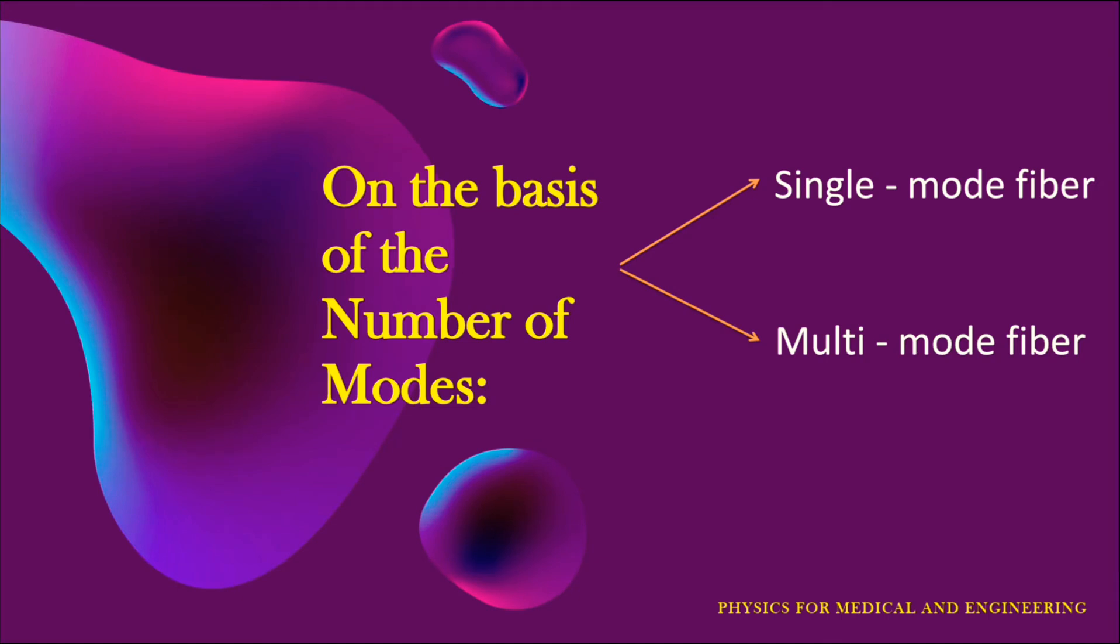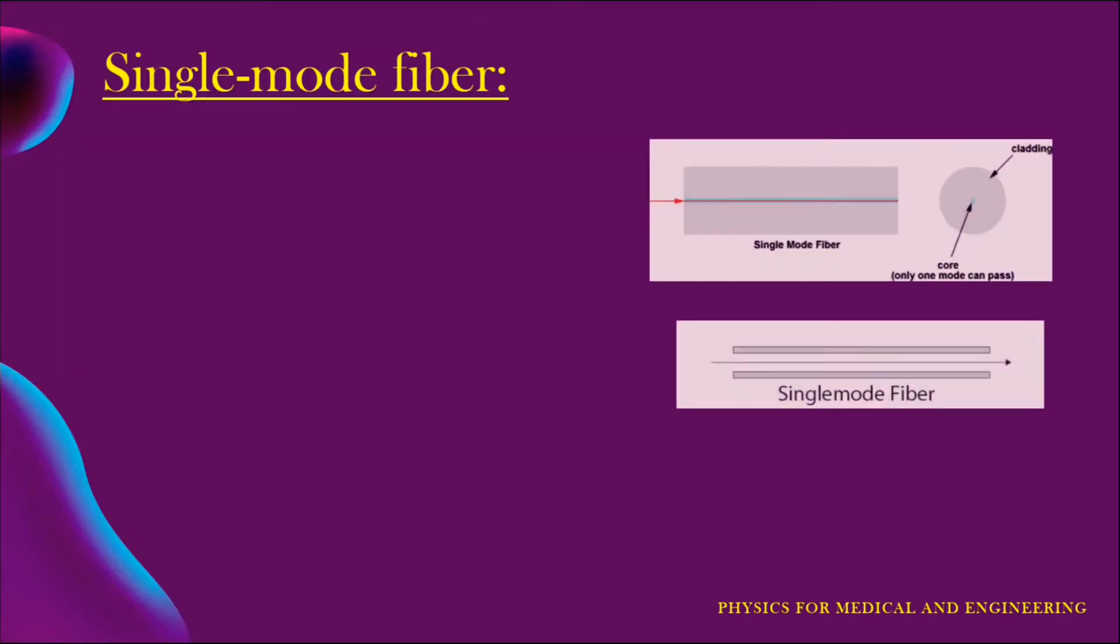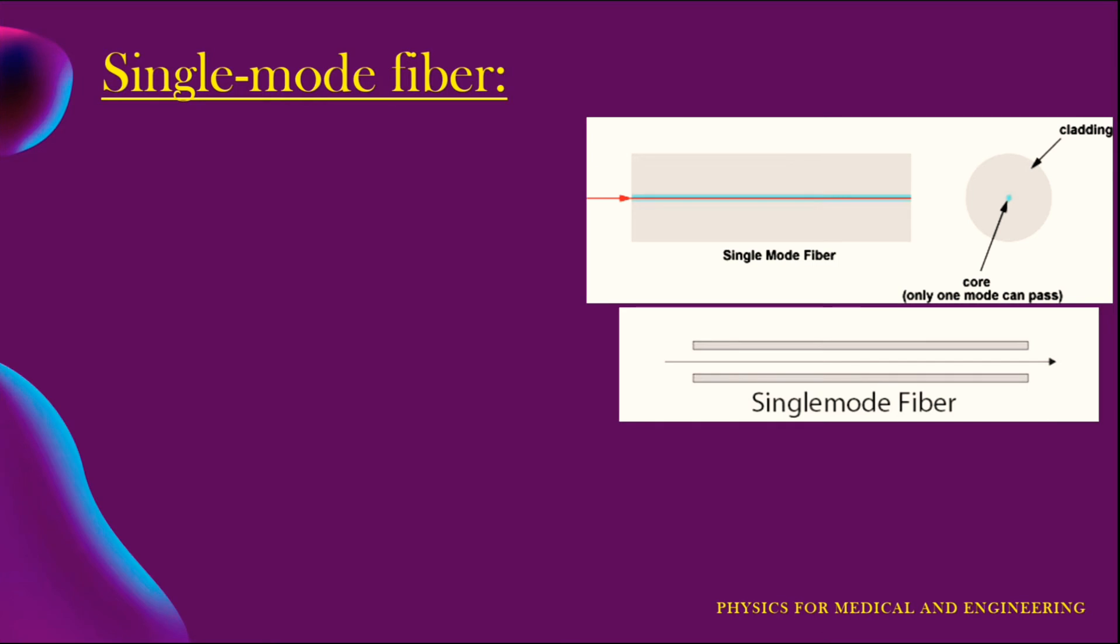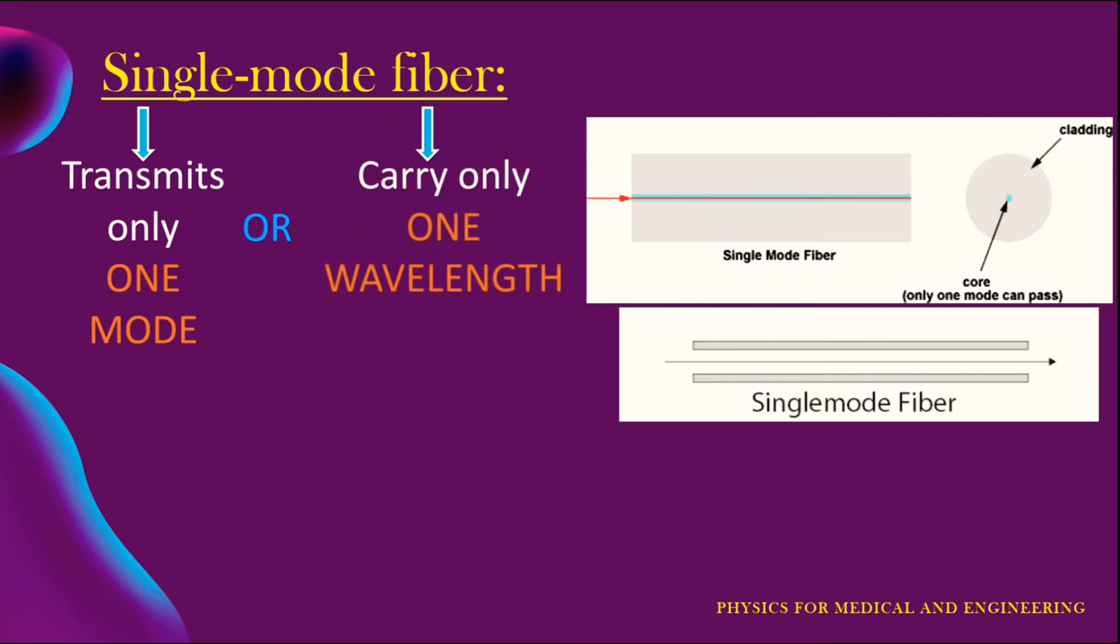Now first, on the basis of the number of modes it is classified into two types: single mode fiber and multi-mode fiber. Single mode fiber, as the name suggests, this type of optical fiber transmits only one mode or one ray of light. To put it another way, it can carry only one wavelength of light across its length.